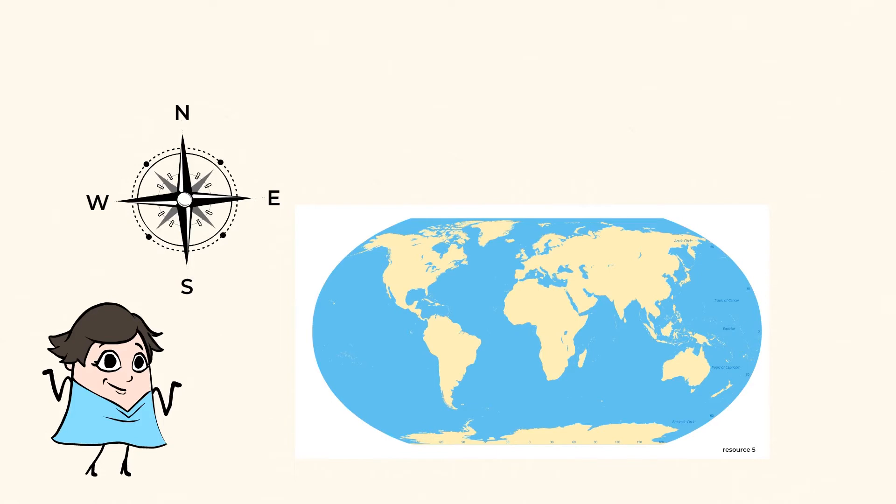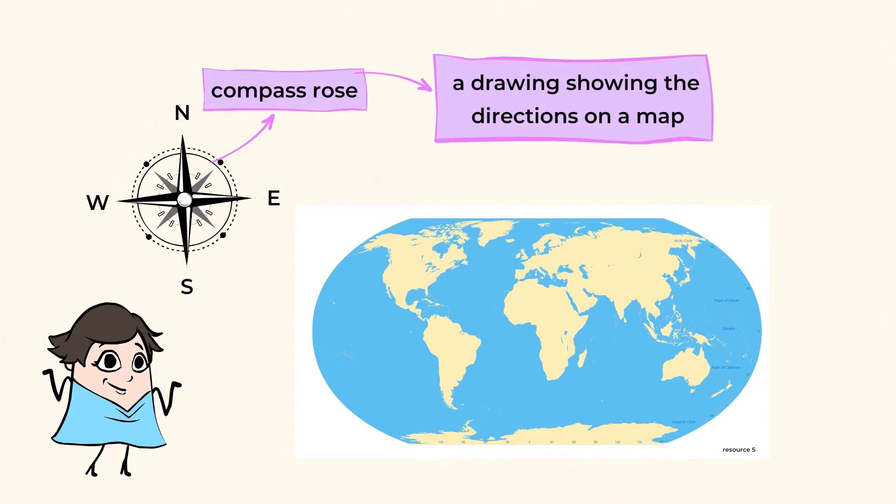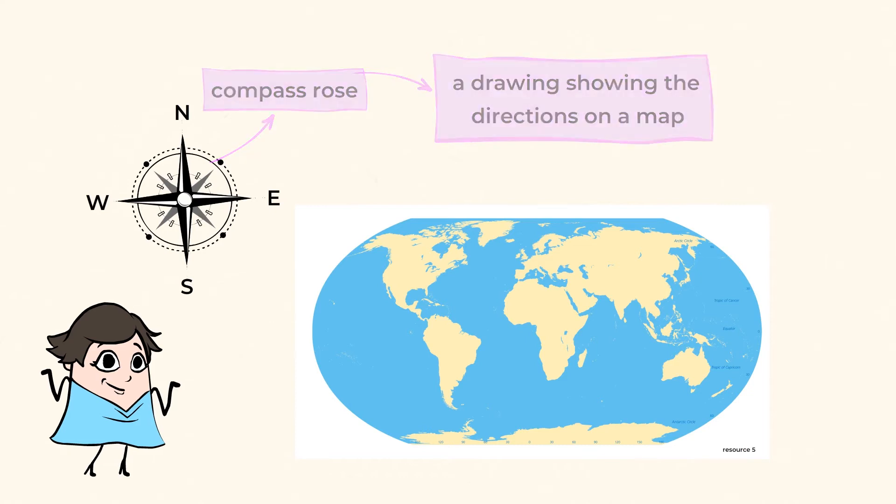We use directions like North, South, East, and West in order to locate places on a map. A compass rose is a drawing showing the directions on a map, and we can use directions in order to divide our planet into different parts.